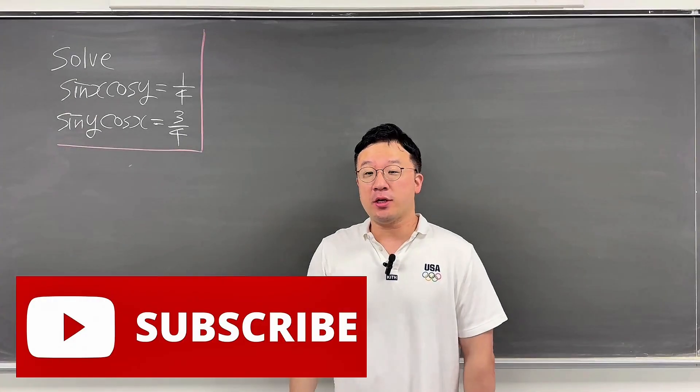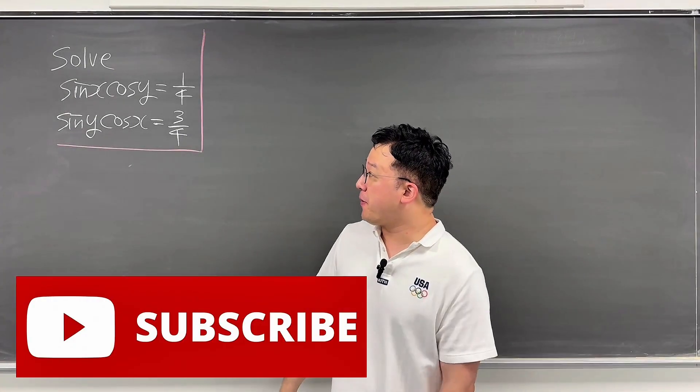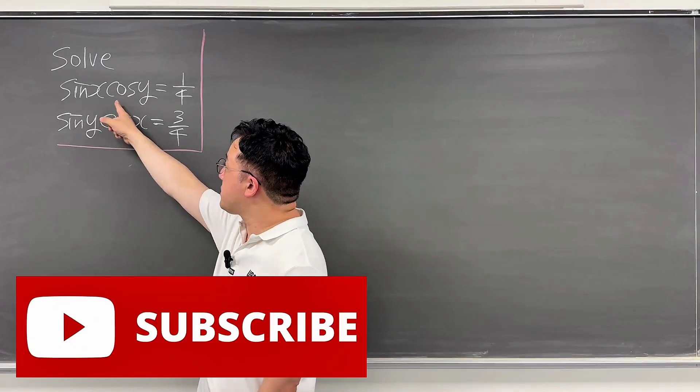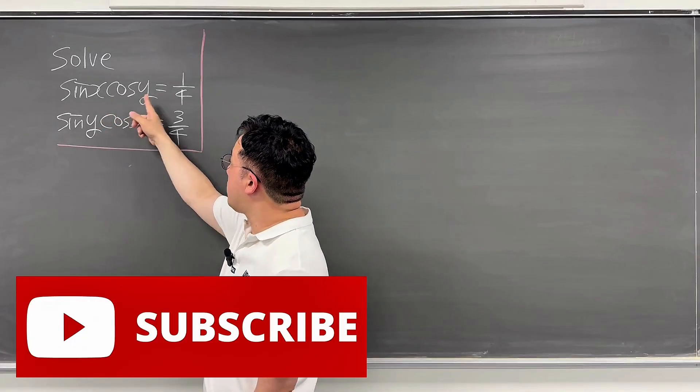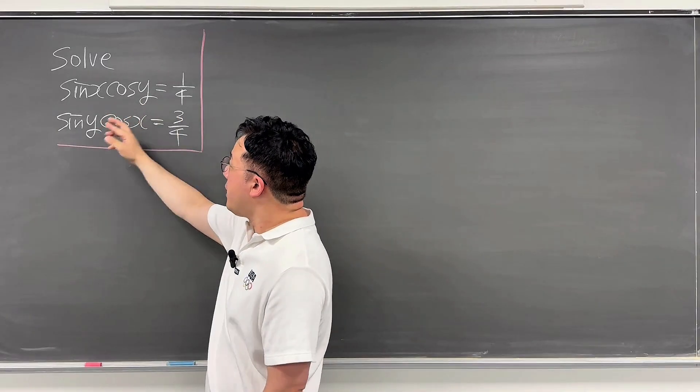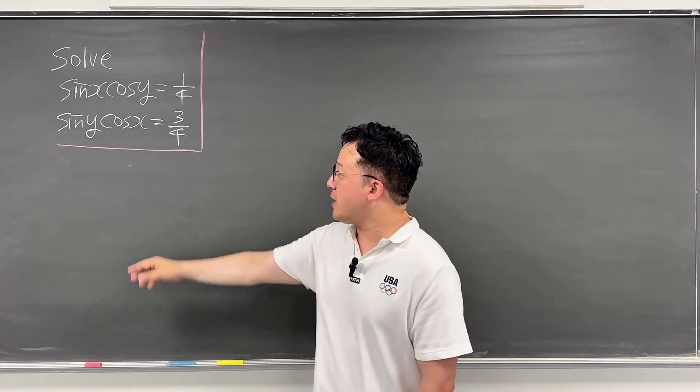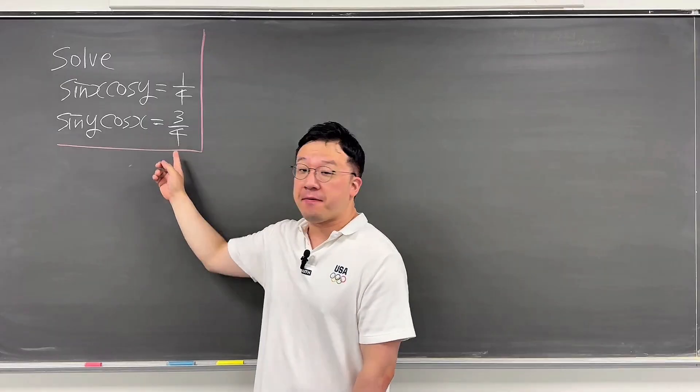Okay, here's the question. Solve for x and y, where sine x times cosine y is equal to 1 over 4, and sine y times cosine x is equal to 3 over 4.